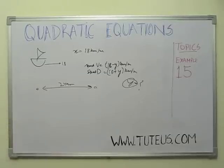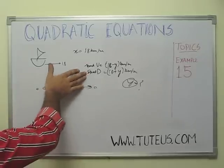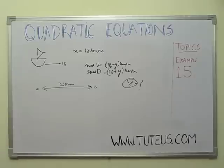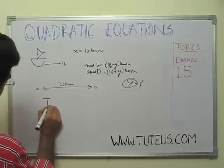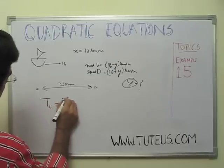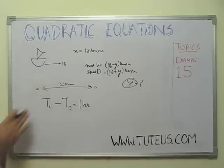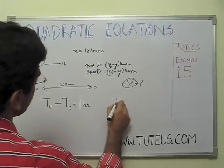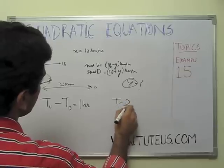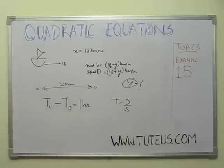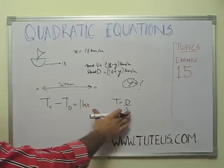The most basic formula is distance equals speed into time. Distance is given, speed is given, and the time difference is 1 hour. The statement says the time upstream minus the time downstream equals 1 hour. Time equals distance divided by speed, so t = d/s.